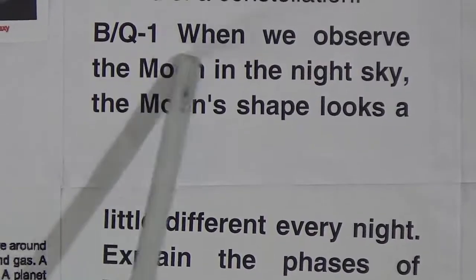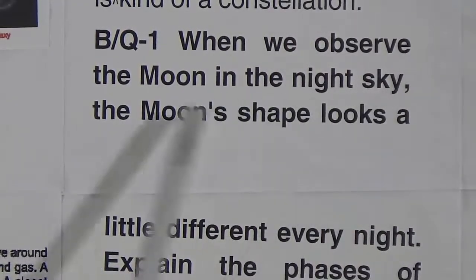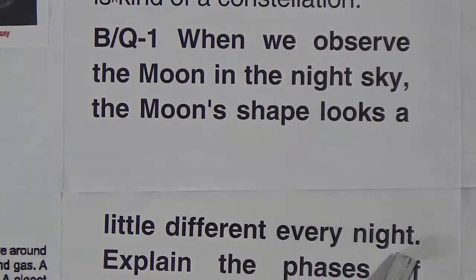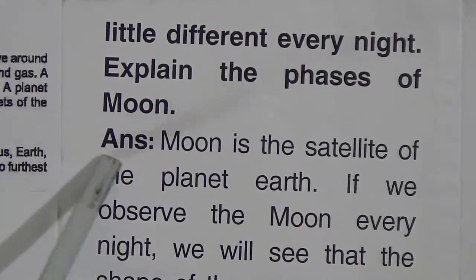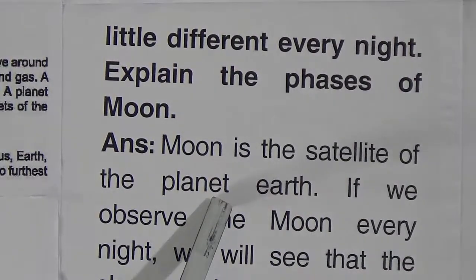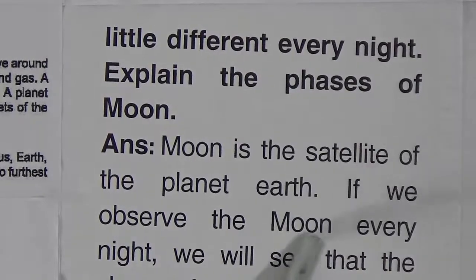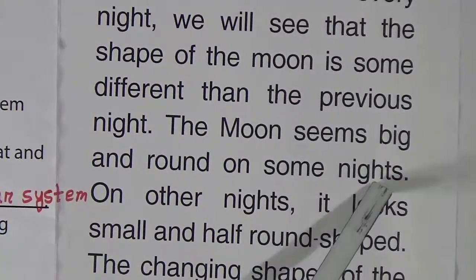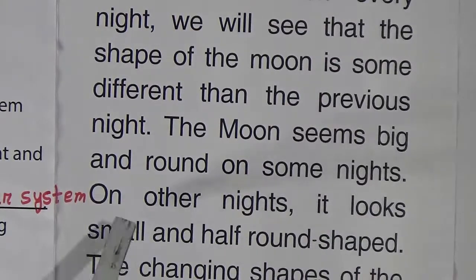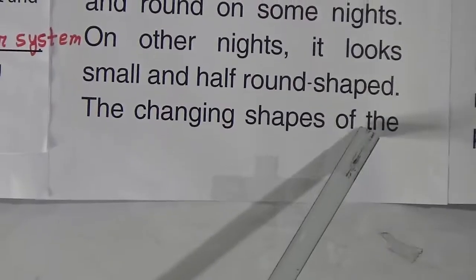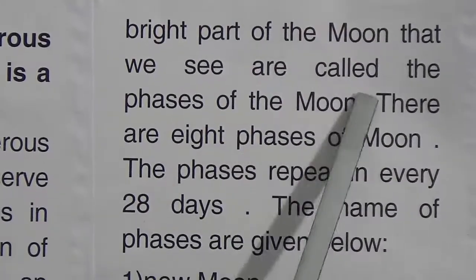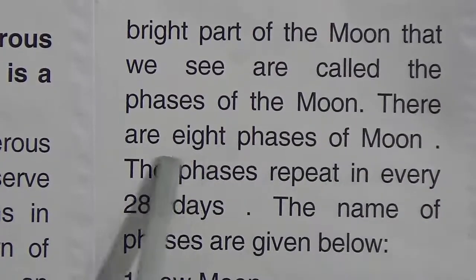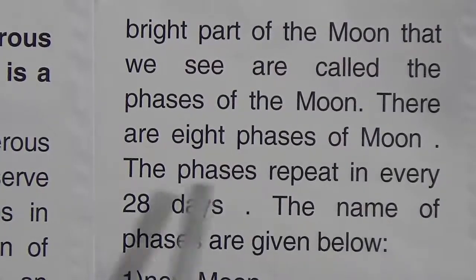Now broad question 1: when we observe the moon in the night sky, the moon's shape looks a little different every night — explain the phases of the moon. The answer: the moon is the satellite of the planet Earth. If we observe the moon every night, we will see that the shape of the moon is slightly different than the previous night. The moon seems big and round on some nights; on other nights it looks small and half-round shaped. The changing shapes of the bright part of the moon that we see are called the phases of the moon. There are 8 phases of the moon, and the phases repeat every 28 days.